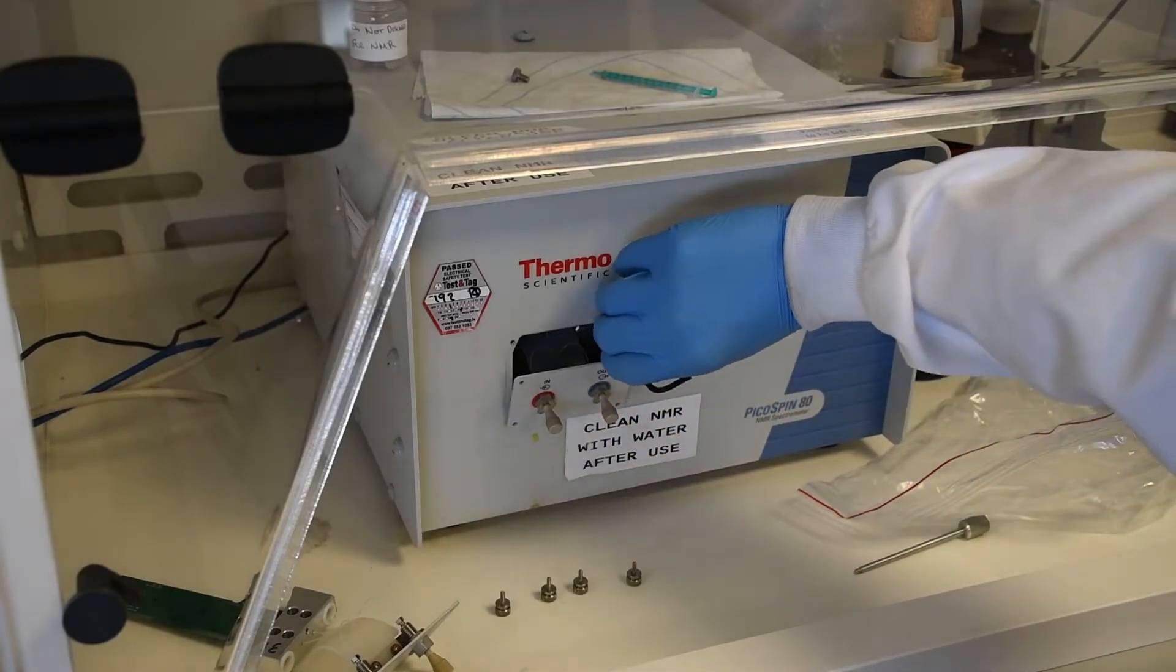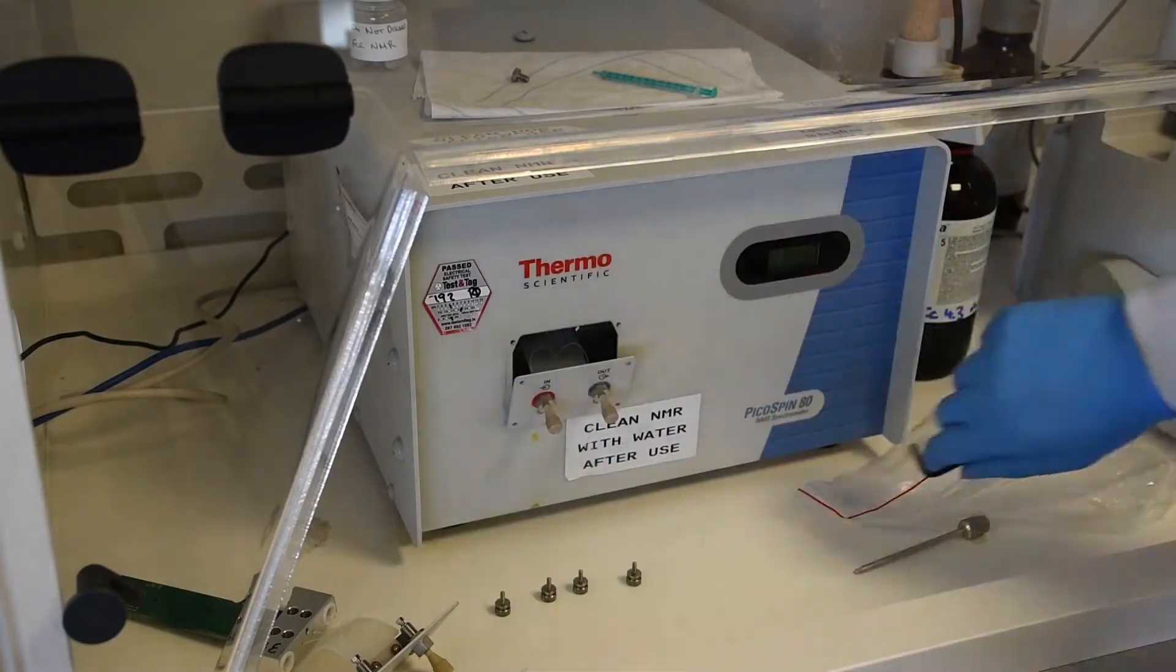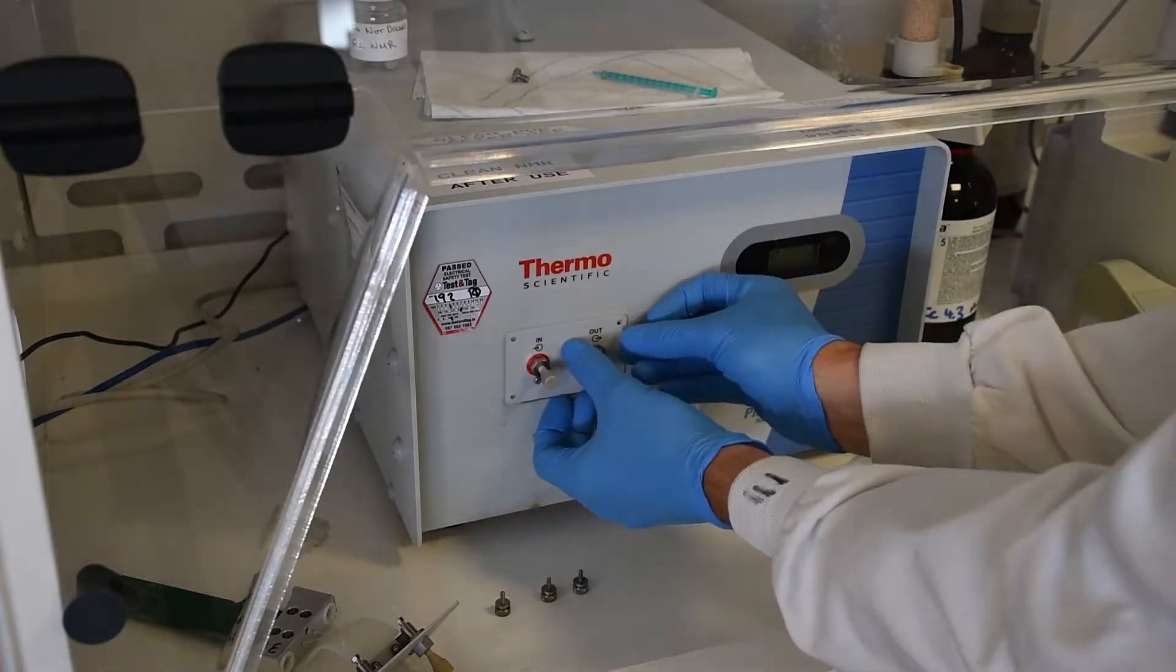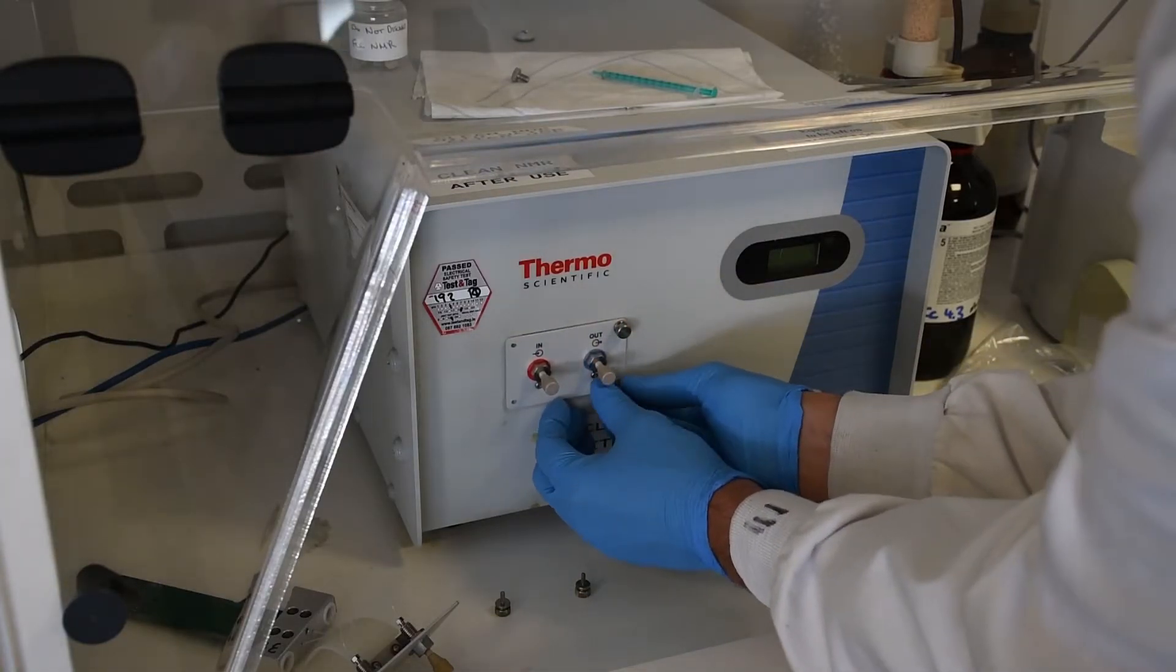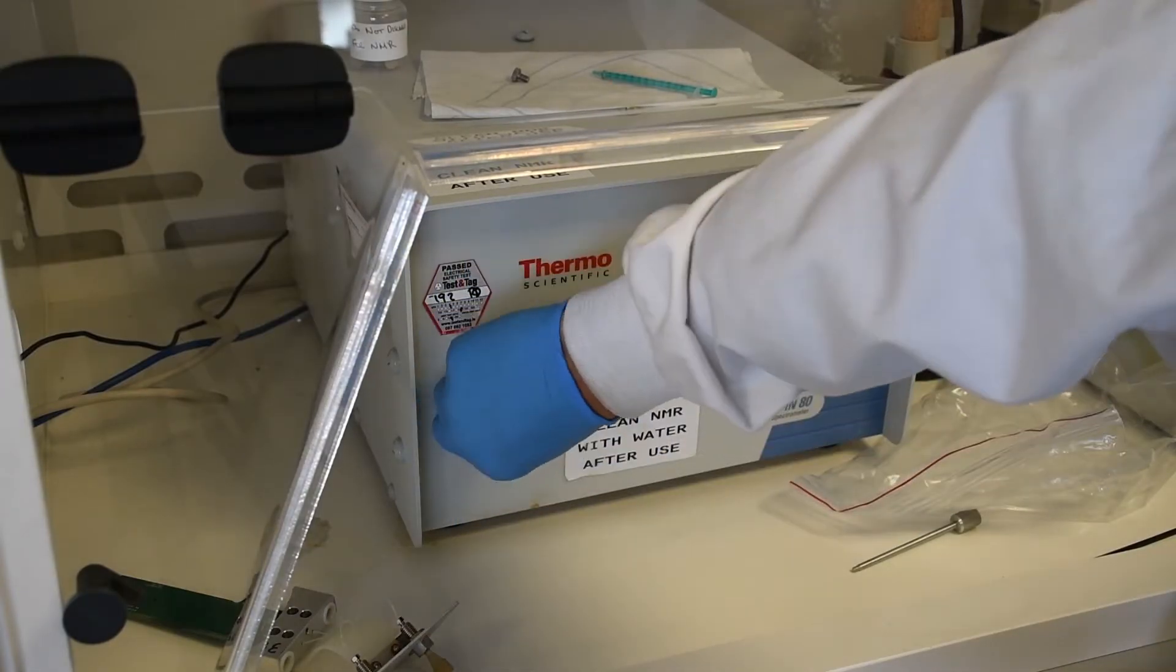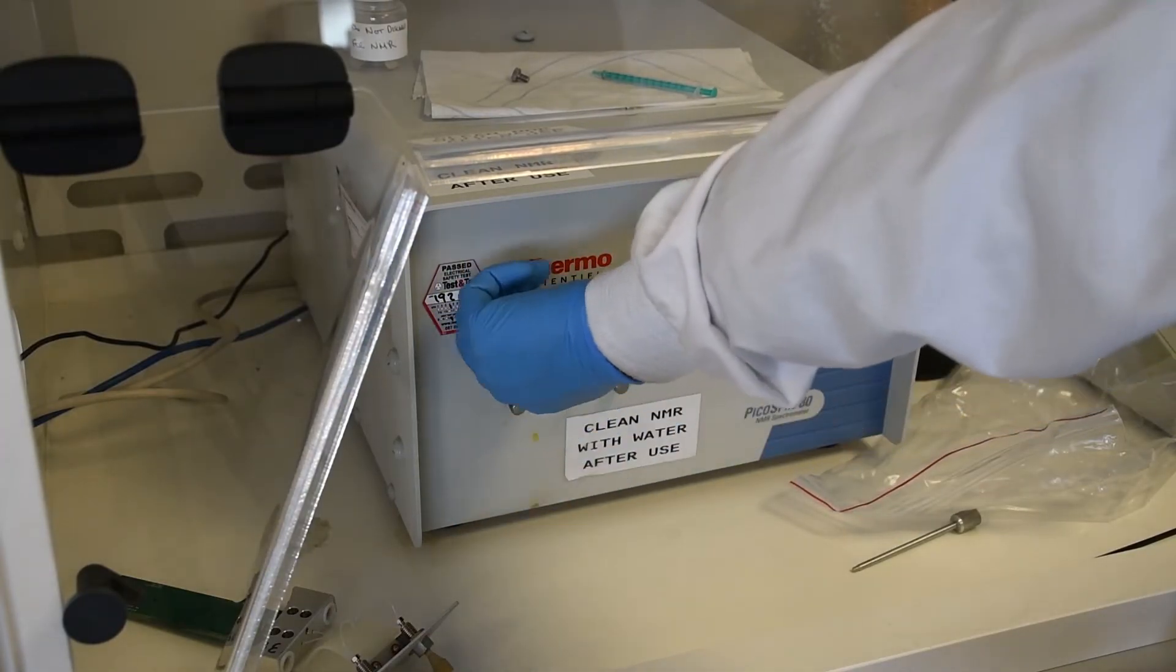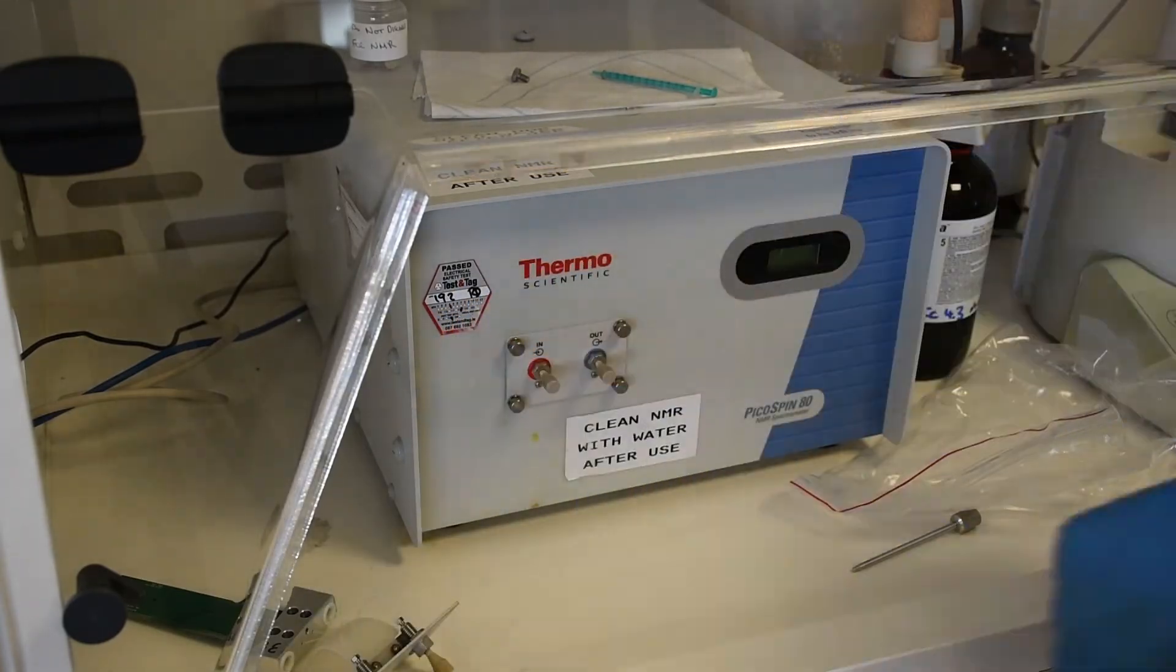Once you are done with that, put the faceplate back on and put in the four finger screws and then you are finished. Again when you are putting the finger screws in, just be a little bit careful not to cross the threads. You can see I put them in not too tight on all four positions and then I follow them around tightening the opposite ones just to make sure that it is nice and not too stressed out, nice and evenly balanced. That is all, thanks for listening.